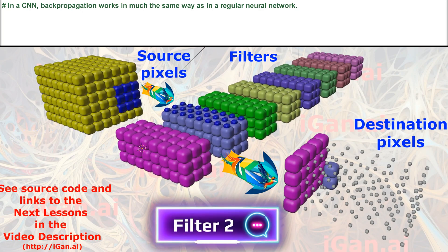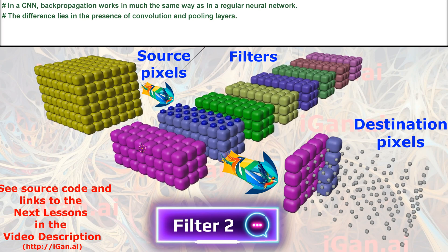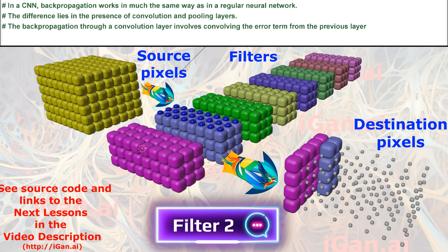In a CNN, backpropagation works in much the same way as in a regular neural network. The difference lies in the presence of convolution and pooling layers.